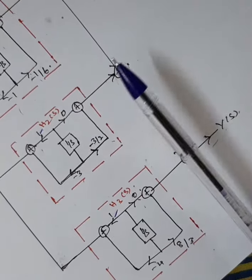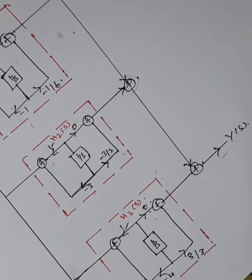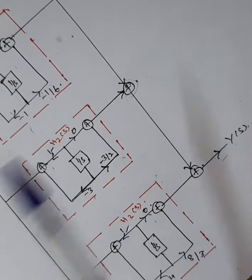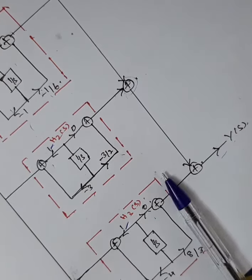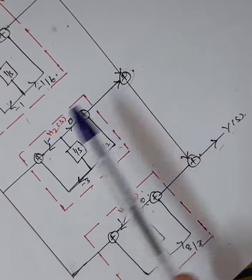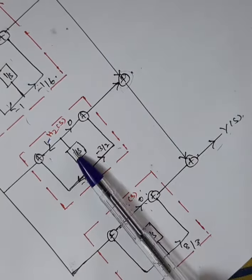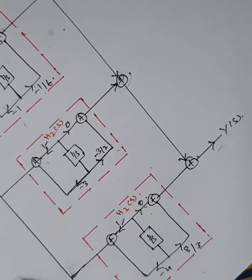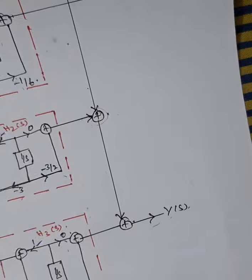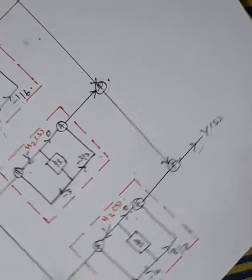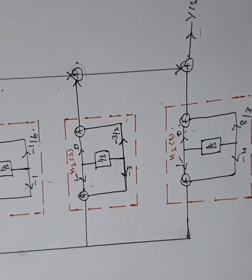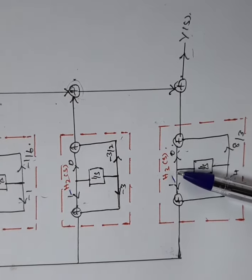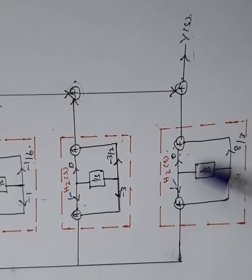Since this is a parallel structure, H1(s), H2(s), and H3(s) blocks are drawn in parallel and combined with adders. Input is X(s) and output is Y(s). Remember: if the arrow direction is opposite, change the sign; if same direction, use positive sign. This completes the parallel realization block diagram.